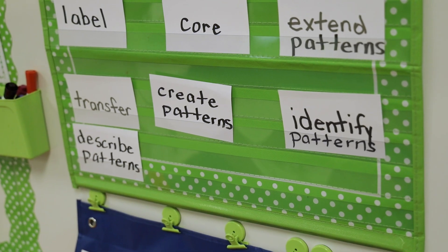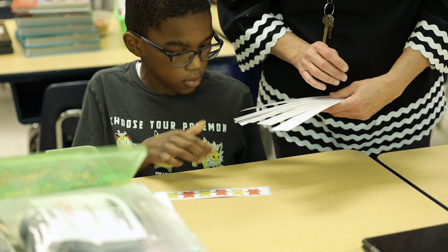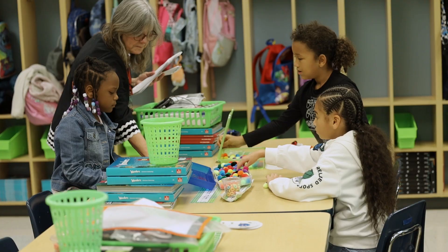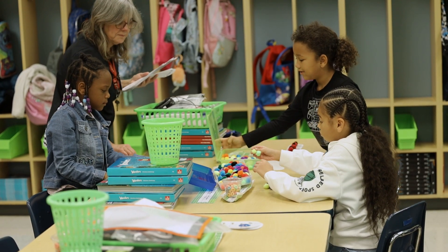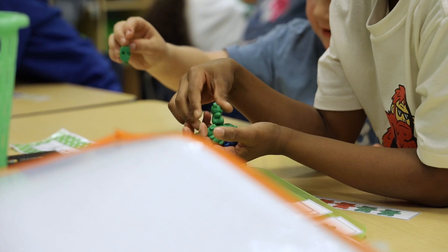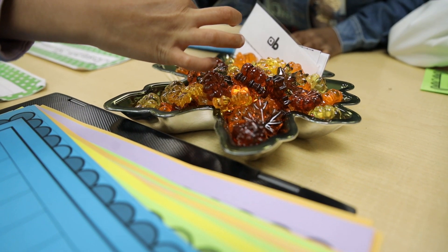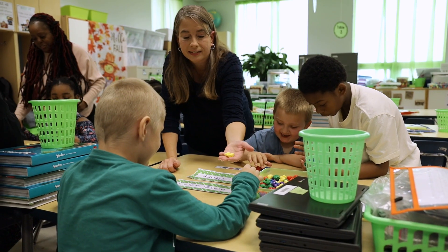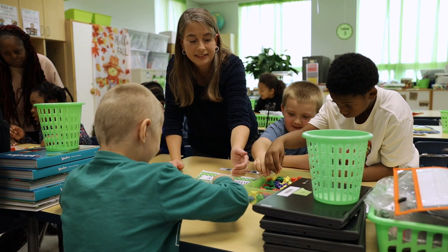The importance of using the model is we start with students at the concrete level, which is the doing aspect, where they actually take manipulatives — hands-on things. They use counters, ten frames, anything to help them understand and get an idea of what they're doing. If it's subtraction, they'll actually take away items; addition, they're adding items; they're building fractions.